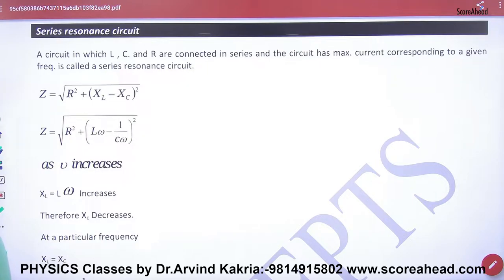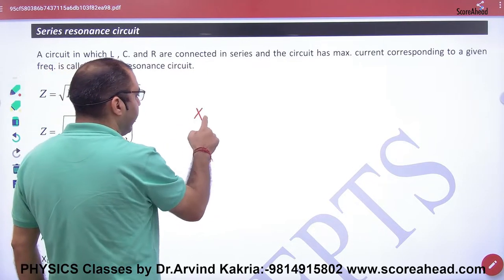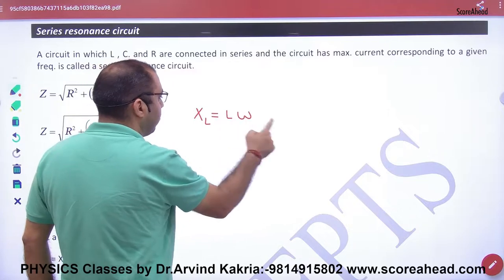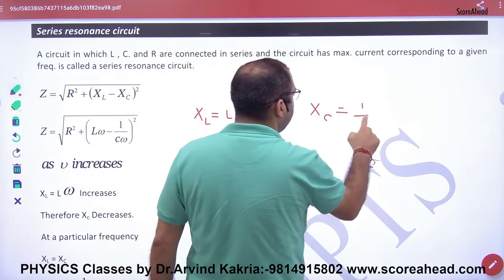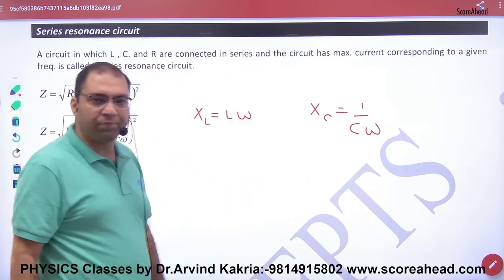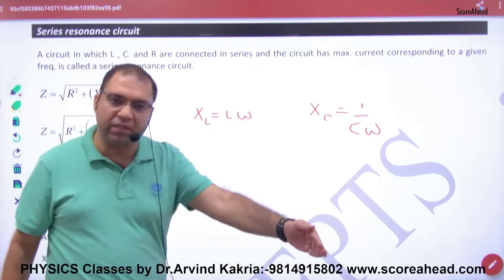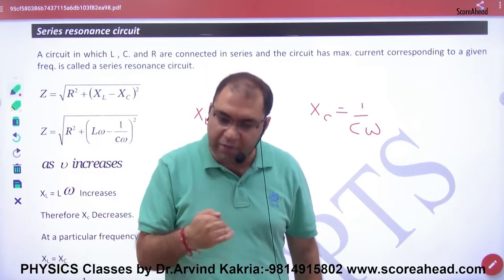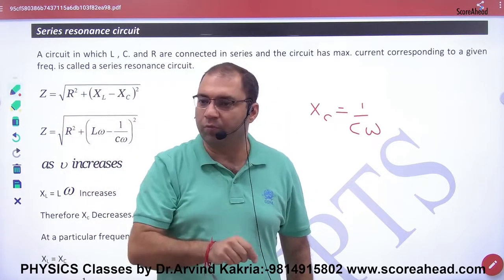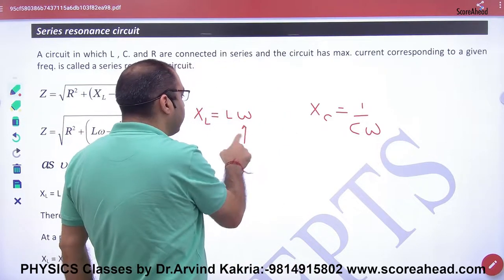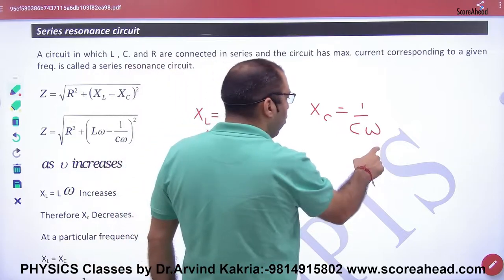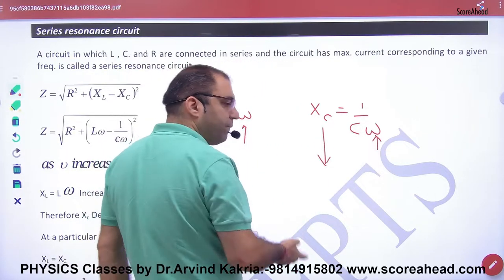XL has the formula Lω, and XC is 1/(Cω). If I have an LCR series with an AC source of EMF, as omega increases, XL will increase and XC will decrease.